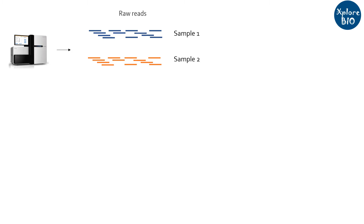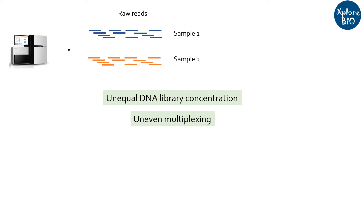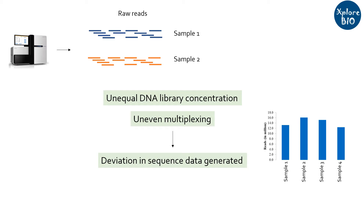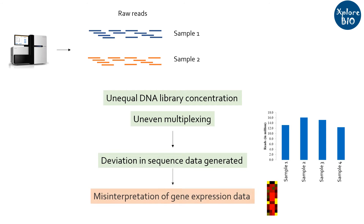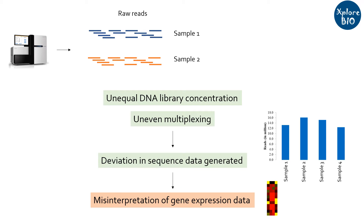While performing gene expression analysis with NGS or transcriptome data, you get sequence data in the form of raw reads. However, uneven DNA library concentration or uneven pooling for multiplexing may result in significant deviation in the data generated among the samples after sequencing. Thus, the library that dominates the sequencing flow cell will result in over-represented reads, while lower concentration libraries will result in under-represented sequencing reads. Analysis of such raw data generally results in misinterpretation of gene expression data, which can have serious consequences.